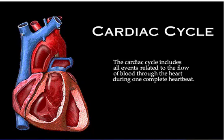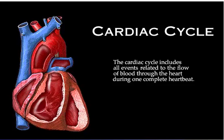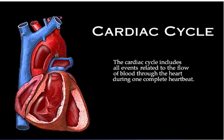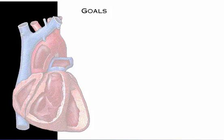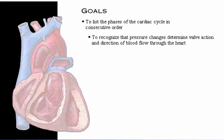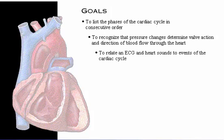The cardiac cycle includes all the events related to the flow of blood through the heart during one complete heartbeat. Your goals for learning are to list the phases of the cardiac cycle in consecutive order, to recognize that pressure changes reflect valve action and the direction of blood flow through the heart, and to relate an ECG wave tracing and heart sounds to the events of the cardiac cycle.